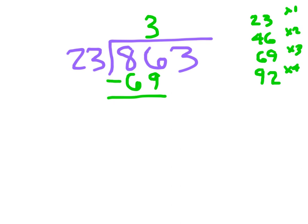3 times 23 is 69. 86 minus 69: 8 becomes a 7, 6 becomes 16, 16 minus 9 is 7, and 7 minus 6 is 1. At that point, I bring down the 3, and we have 173.